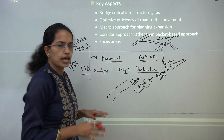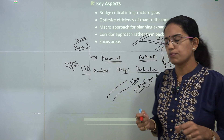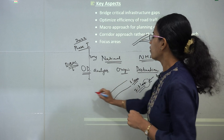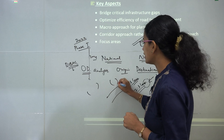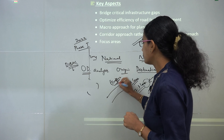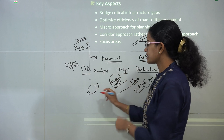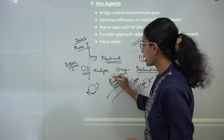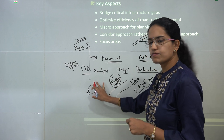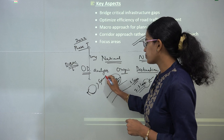Another important aspect is a focus area approach. The idea is to find out the basic areas where there is more traffic congestion and resolve it on an immediate need basis. The areas which are having higher traffic congestion — we are trying to relieve that congestion. That's the focus area approach.